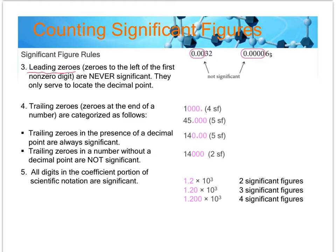Leading zeros — those are zeros that begin a number — are never significant, regardless of how they're presented. You can think of leading zeros as telling us the order of magnitude or acting as placeholders, but they have nothing to do with the precision of a measurement. Those zeros are going to be there regardless of the equipment you use because they tell us about the size and magnitude of a number.